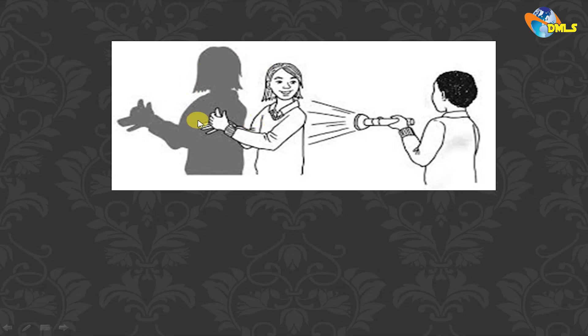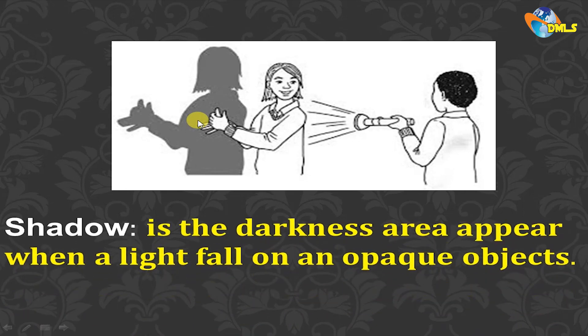If you remember, you have three types of material: transparent material, translucent material, and opaque material. Only the opaque material doesn't allow the rays that come from the torch or from a tree to pass through it, so the shadow is formed. The definition of a shadow is a darkness area that appears when light hits an opaque object.